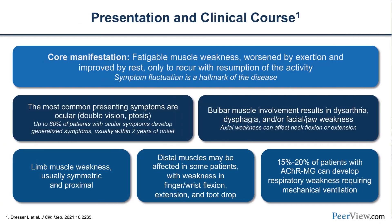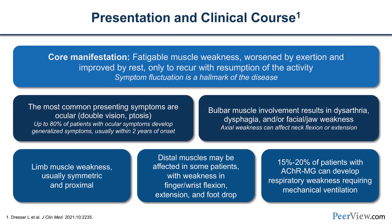The core manifestations of myasthenia are fatigable muscle weakness, made worse by activity and improved with rest, only to recur once the activity is resumed. First noted back in the 1600s by the anatomist Sir Thomas Willis, it is the symptom fluctuation which is the hallmark of the disease. To be able to demonstrate that, particularly in the eyelid or the muscles of eye movement, one has essentially made the diagnosis of myasthenia.